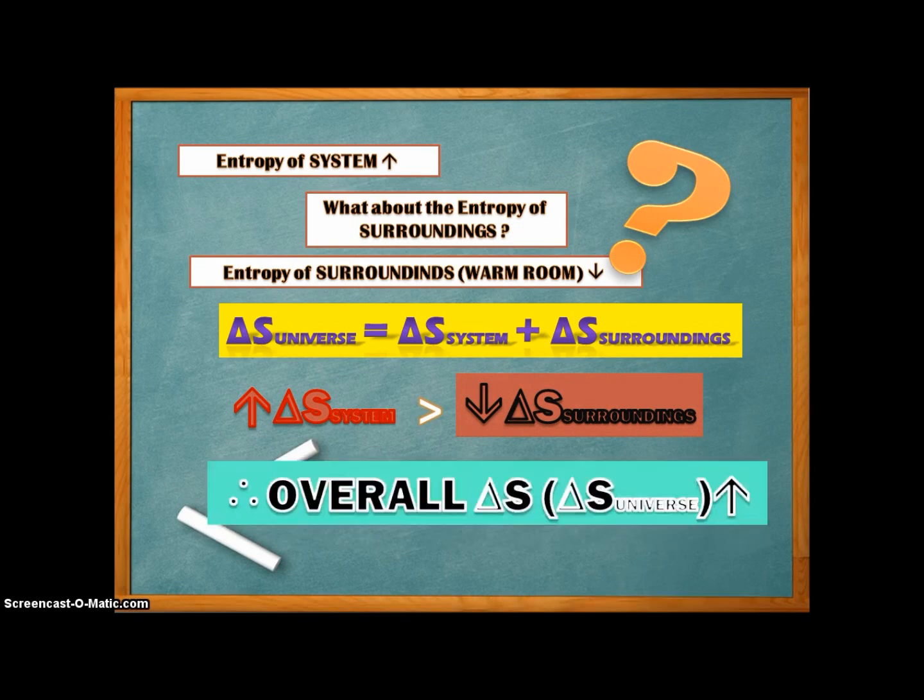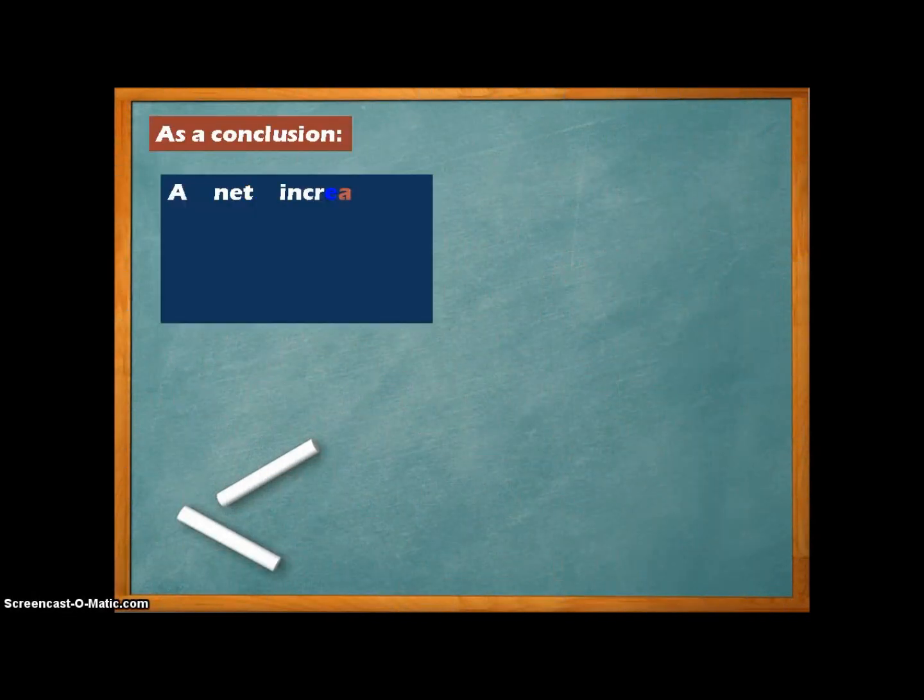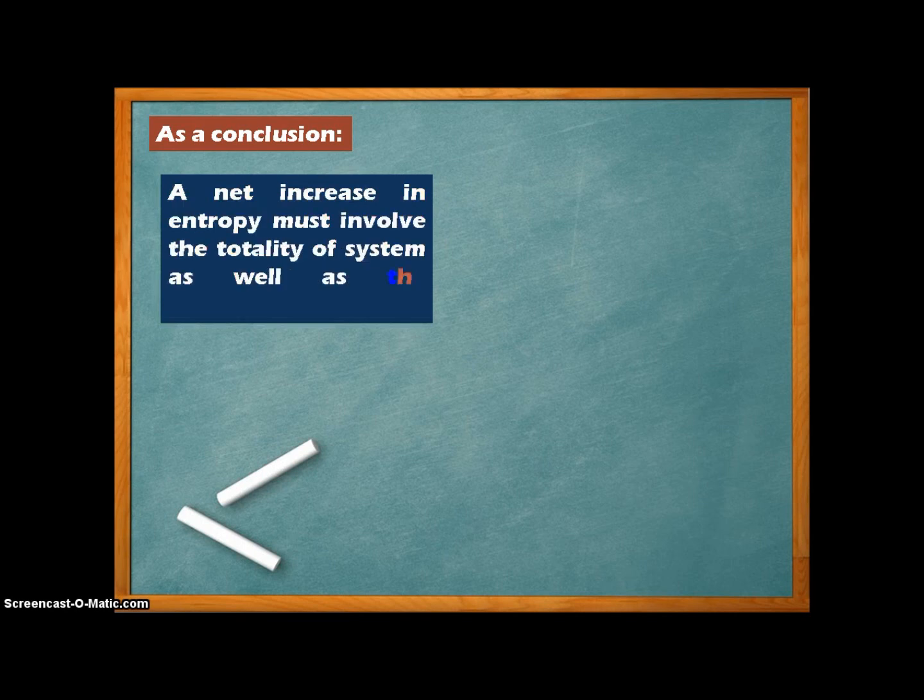To be more precise, the entropy of the universe increases. Yes, you are right. A general conclusion is that any transfer of energy due to temperature difference that results in a net entropy increase must involve the totality of system as well as the surroundings.